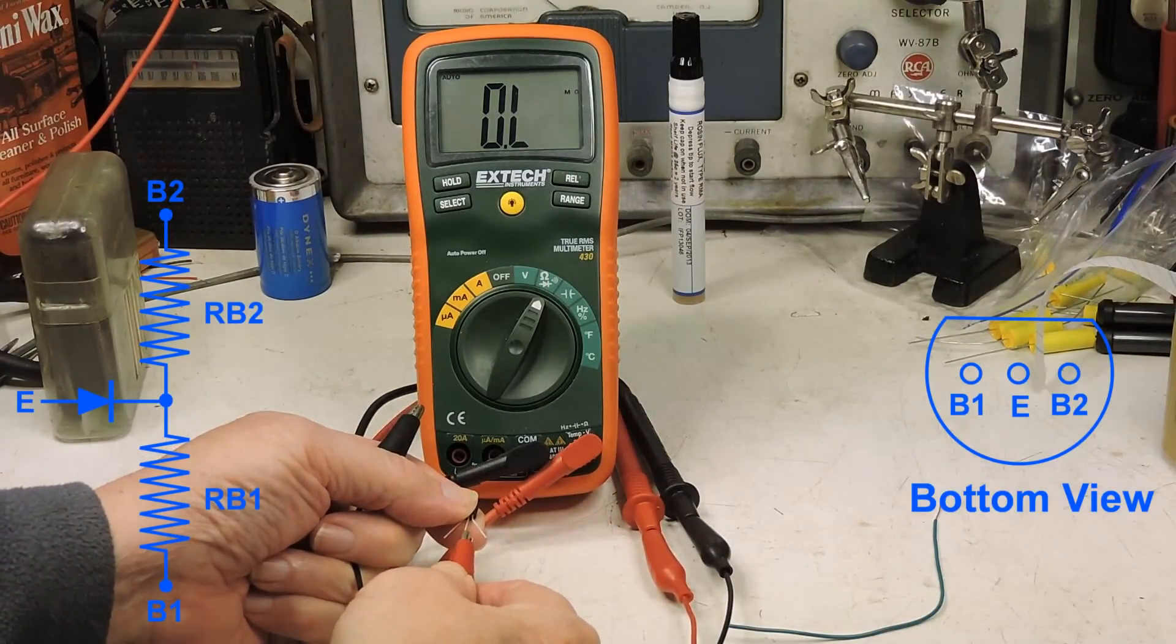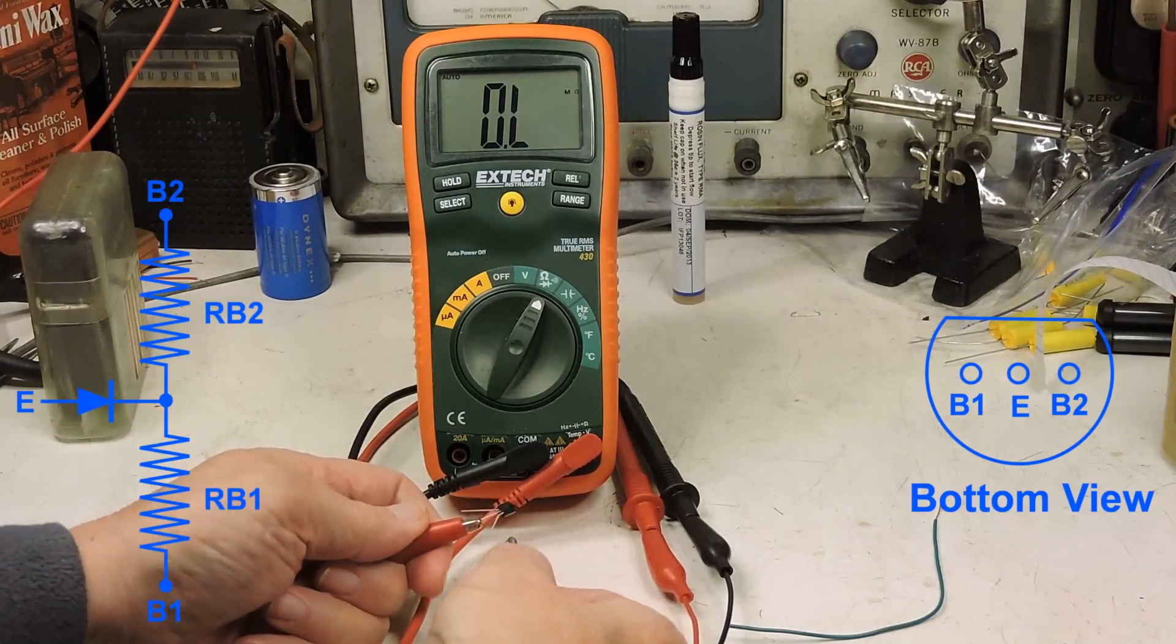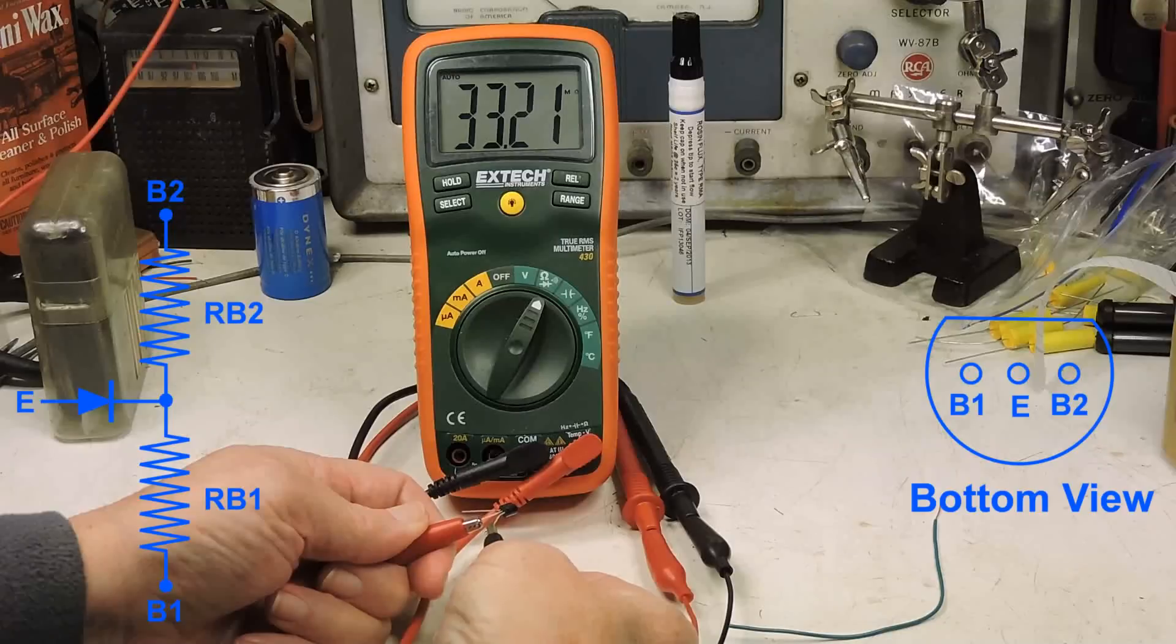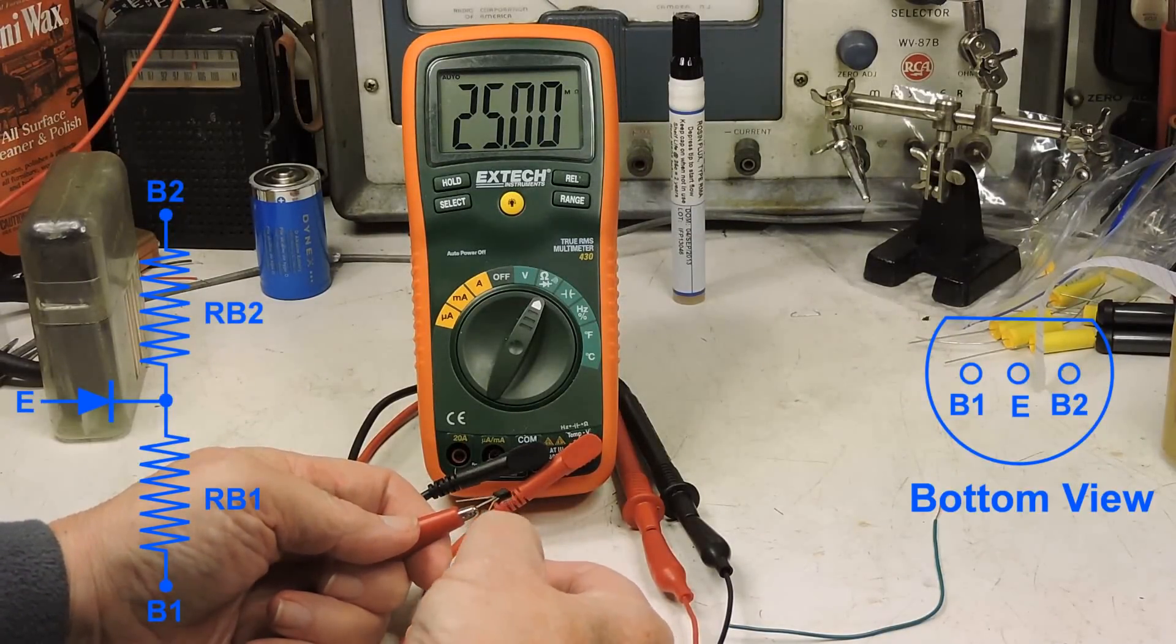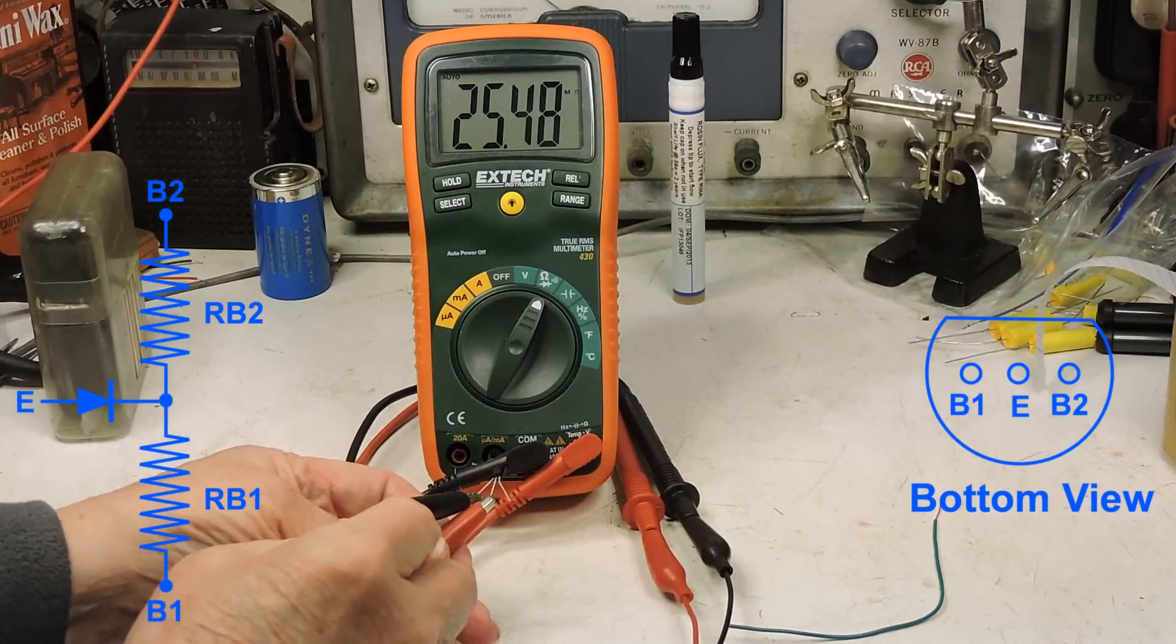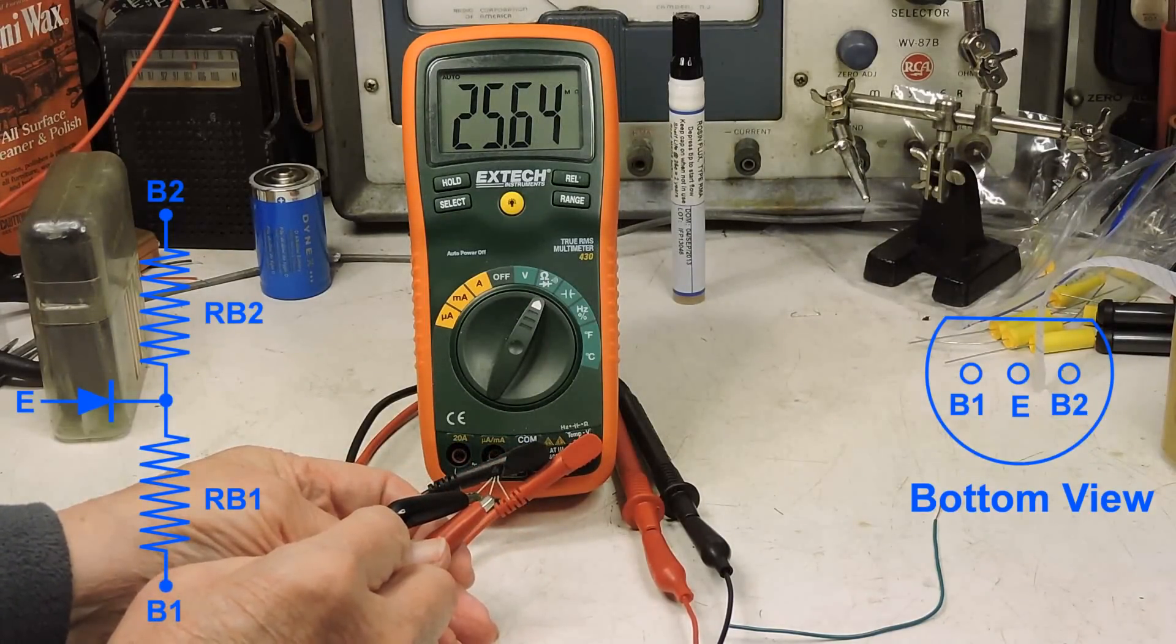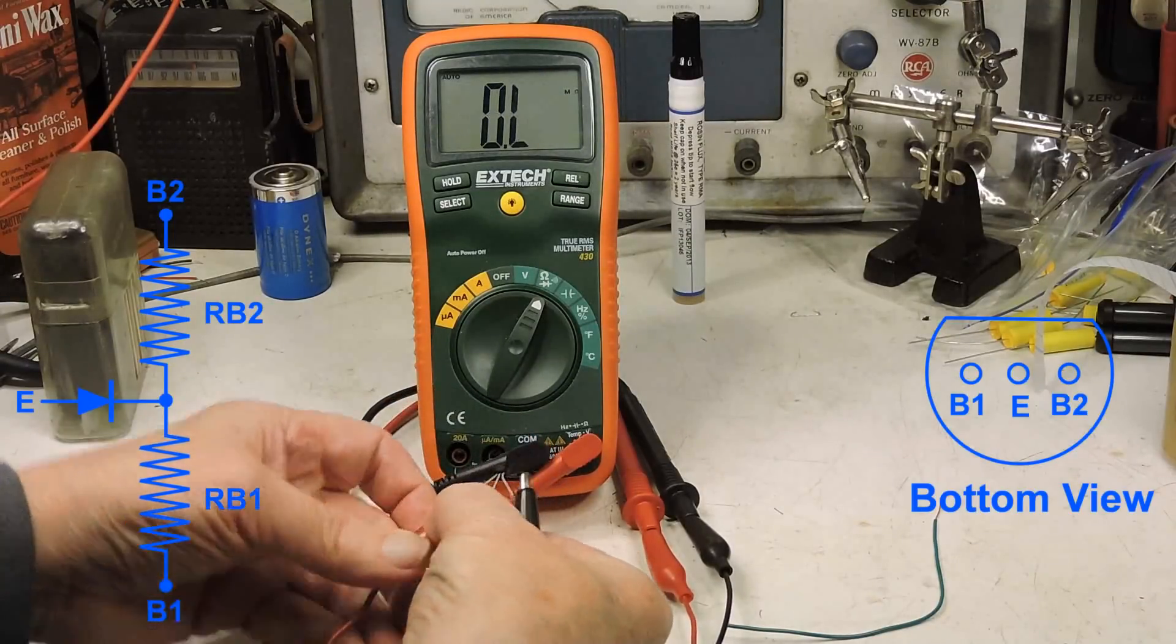Now I've got the positive lead on E, and the negative lead on B2, and we've got about 25 megs there, and on B1, a little over 25 megs.